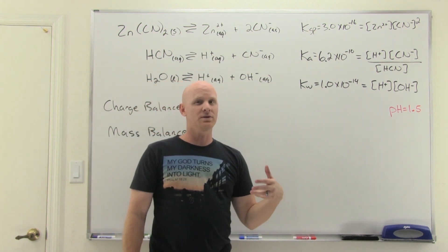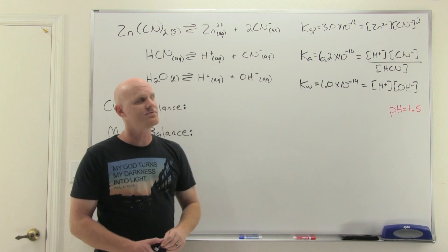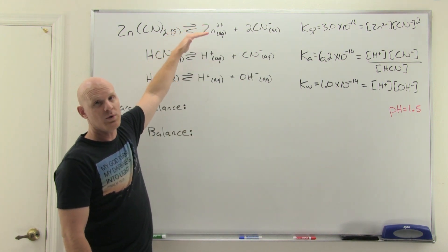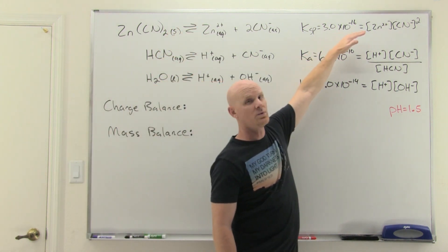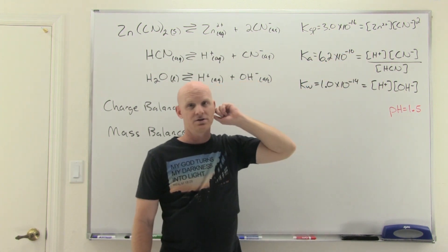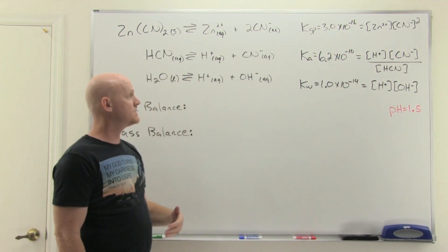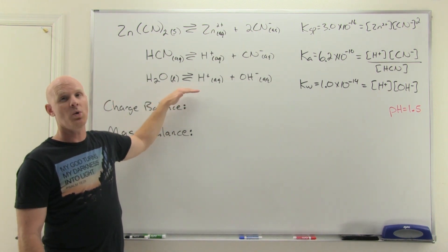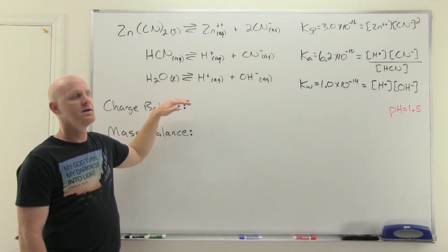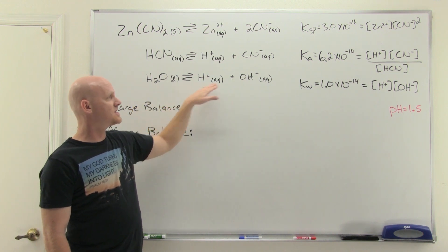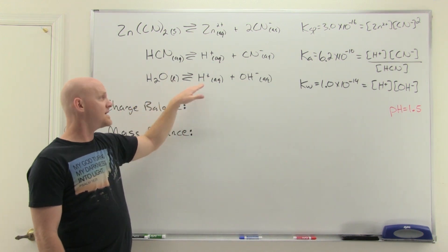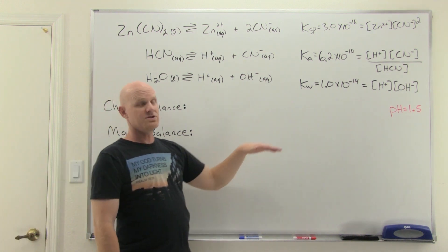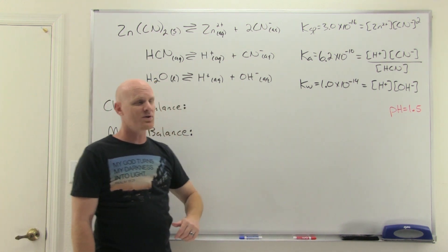With the systematic treatment of equilibrium, there's a standard method you follow. The first thing you want to do is write out all your equilibria and their corresponding equilibrium constant expressions. One thing you should always keep in mind: you're almost always doing this with aqueous equilibria, and in aqueous solution you've always got the auto-ionization of water. Whether you write it as water dissociating to give H⁺ and OH⁻, or two waters giving H₃O⁺ and OH⁻ — same difference. You should always include that somewhere along the way.